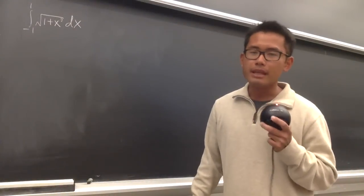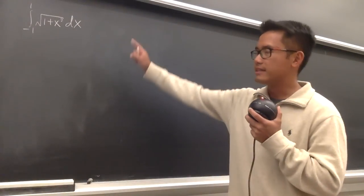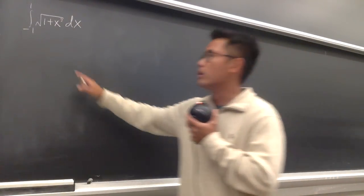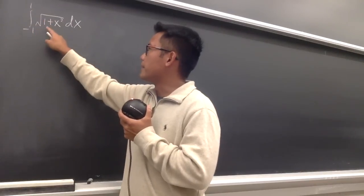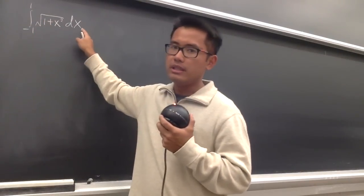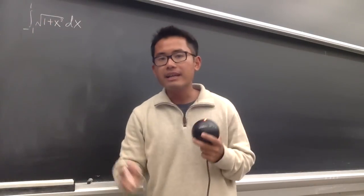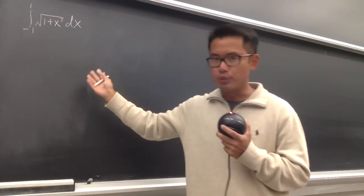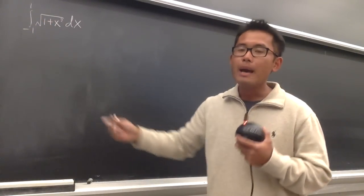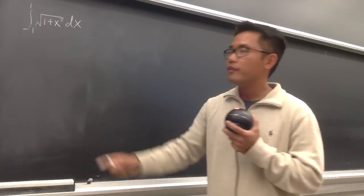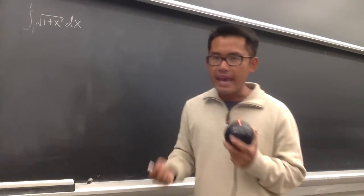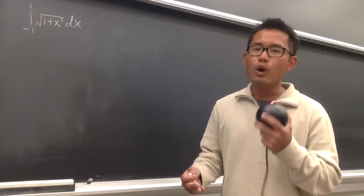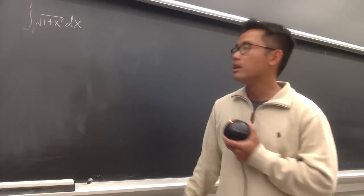Sometimes u-substitution can be weird, and let's take a look at this integral: the integral from negative 1 to 1 of the square root of 1 plus x squared dx. I did this with you previously already, but in this video, let me do a quick recap and then I will show you all the explanation.